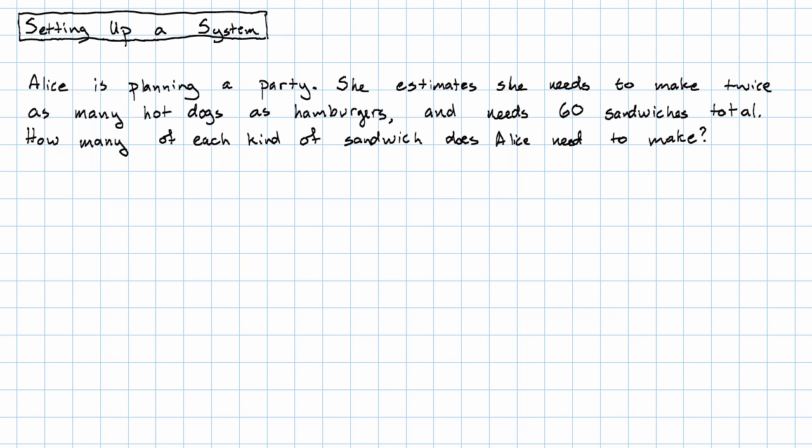Suppose Alice is planning a party. She estimates she needs to make twice as many hot dogs as hamburgers, and needs 60 sandwiches total. How many of each kind of sandwich does Alice need to make?